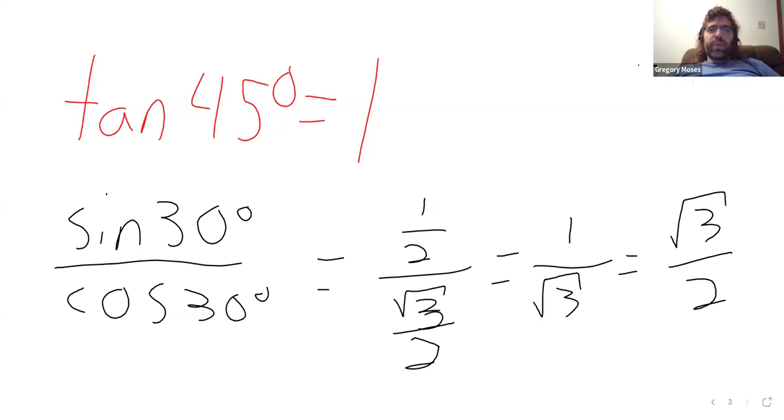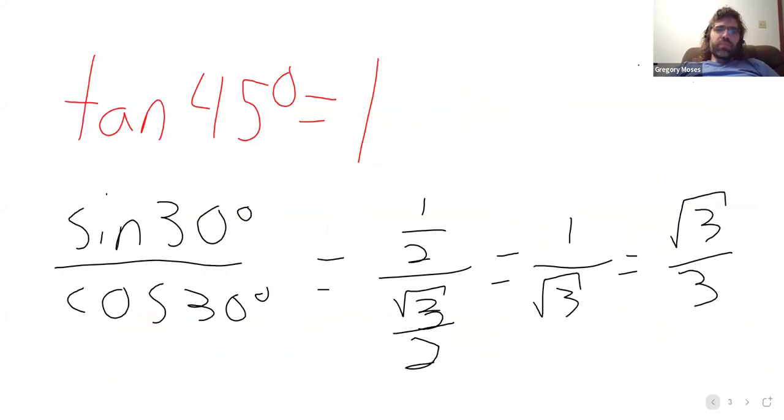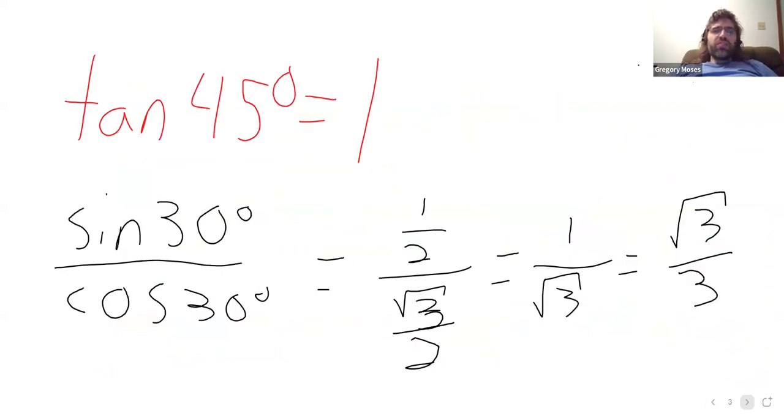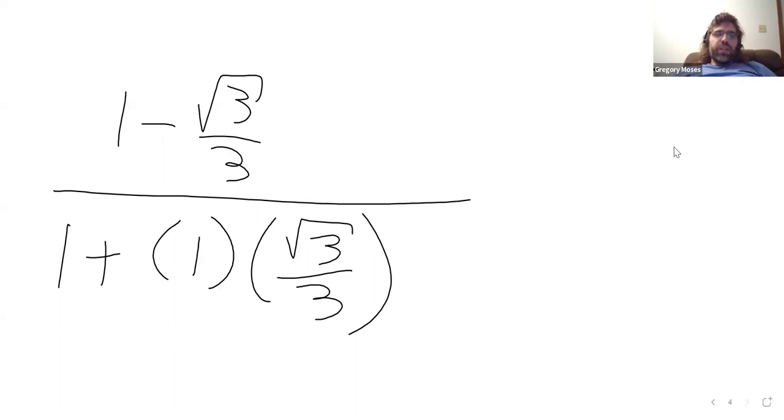Which, if you wanted to, you could rewrite as the square root of 3 over 3. I'm just being very sloppy today. I apologize. It's the square root of 3 over 3. So, the tangent of 45 degrees is 1. The tangent of 30 degrees is this. Then we have 1 plus the tangent of 45 degrees times the tangent of 30 degrees. And woof.